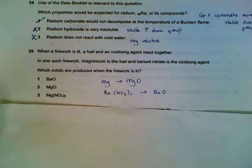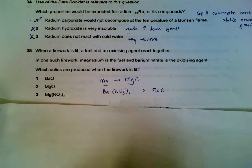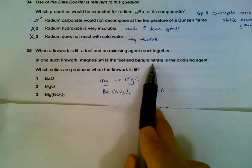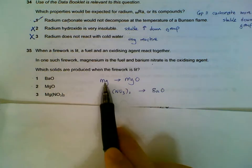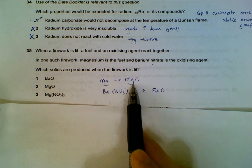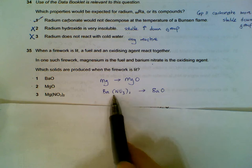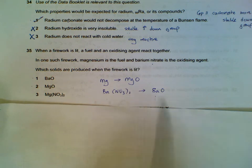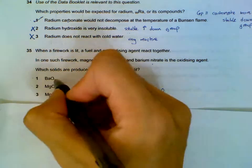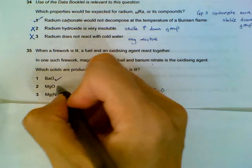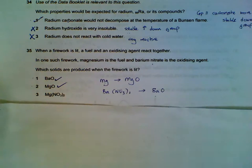Question 35: magnesium and barium nitrate in fireworks. When the firework is lit, magnesium is oxidized in the atmosphere — it burns and becomes magnesium oxide. Barium nitrate decomposes under heat; as Group 2 compounds decompose they form Group 2 oxides. So we get barium oxide and magnesium oxide.